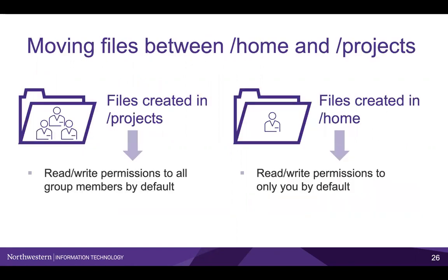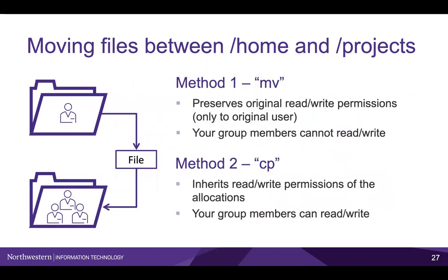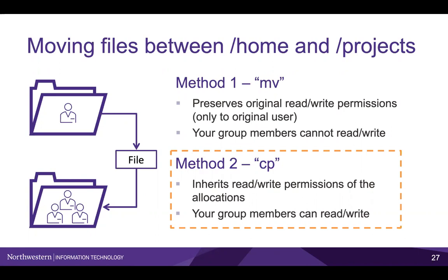By default, files created in an allocation directory will have read and write permissions for the entire group that has access to that allocation. However, files created in your home directory will only have read and write permissions for you. This can cause some issues with sharing. Say you create a file in your home directory and want to share this file with other members of your allocation. If you use the mv command to move your file to the allocation directory, the file will retain its original permissions from your home directory, and the other members of your allocation will not have read and write permissions to this file. That's why we highly recommend copying the file to your allocation directory using cp instead of mv. cp will make the newly copied file inherit the group permissions of the allocation directory it's copied to, which will allow other members of your allocation to access the newly copied file.